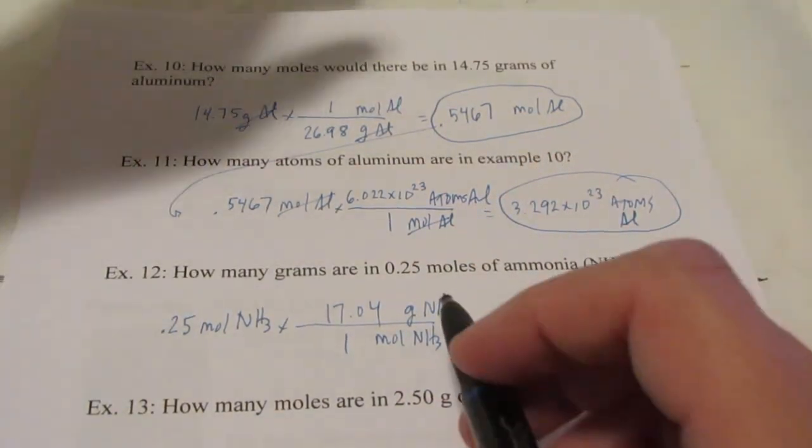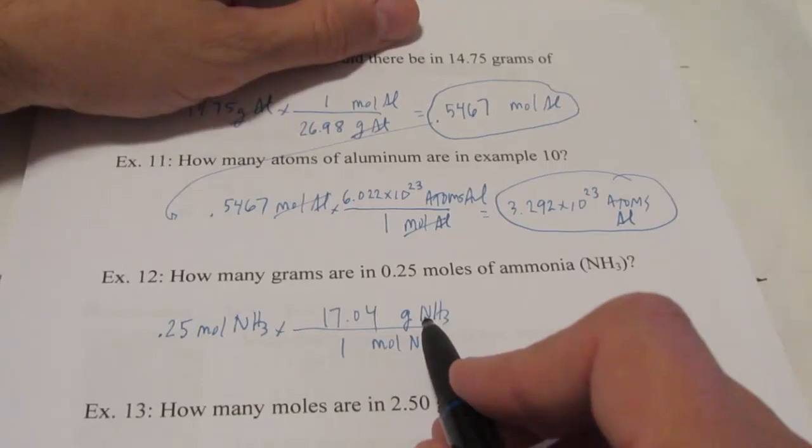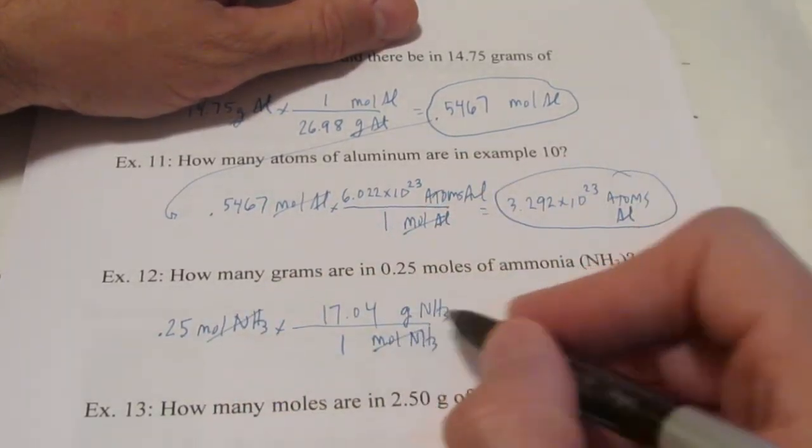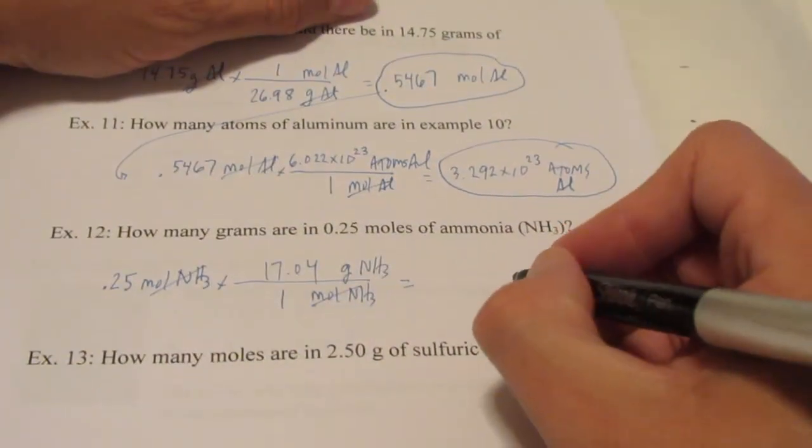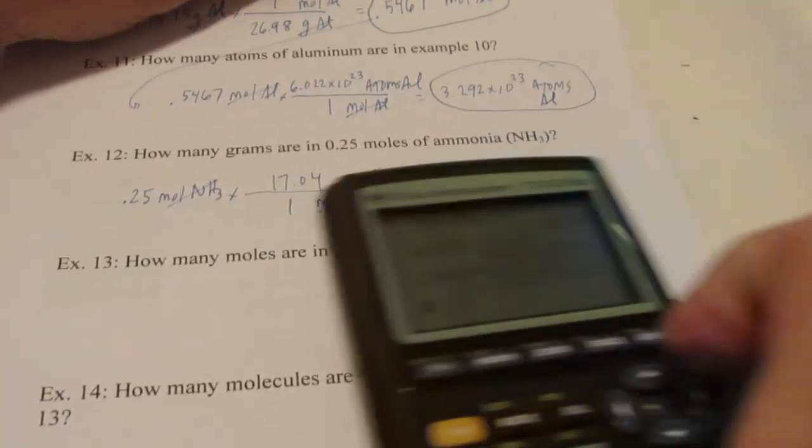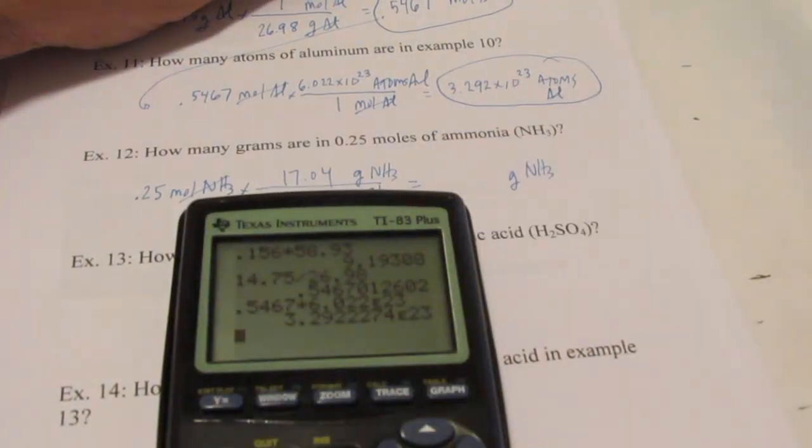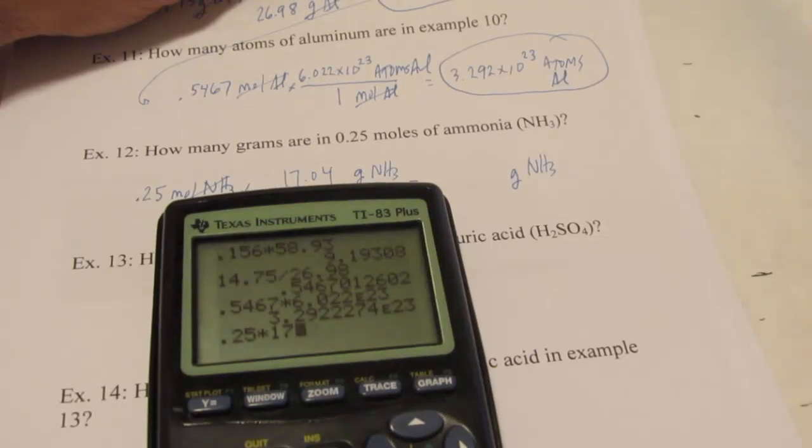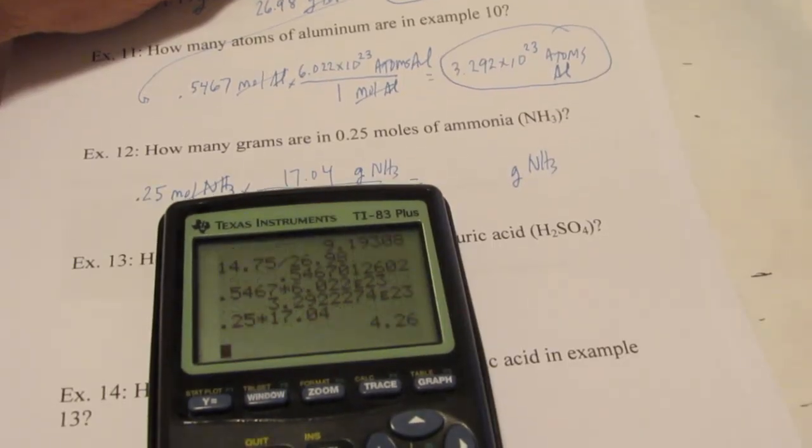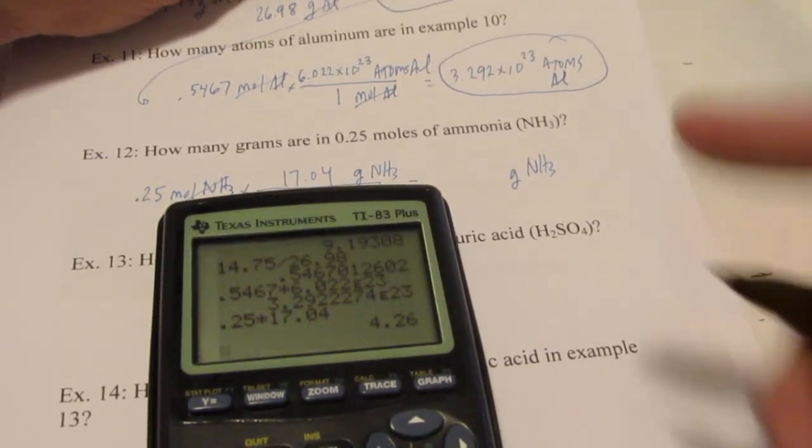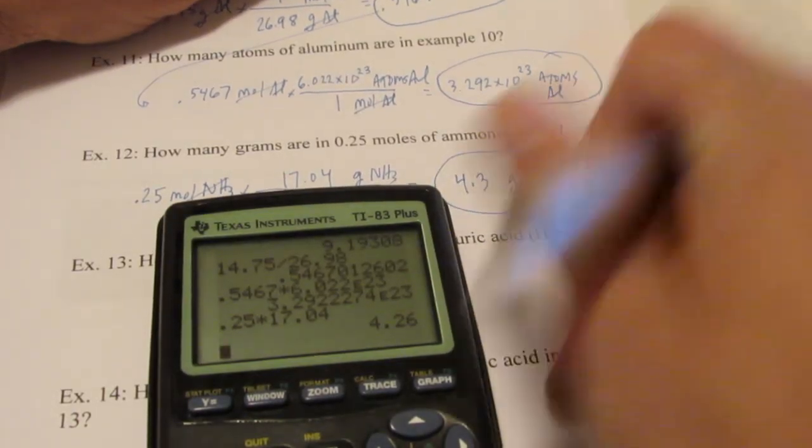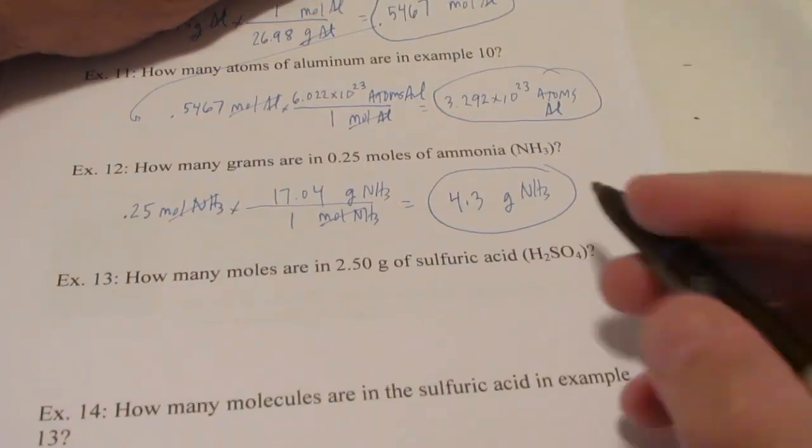So 17.04 grams per mole. Now, just as a review, we got that by adding the mass of 1 nitrogen to the mass of 3 hydrogens. So moles disappear, and we're into grams of ammonia. Now, it looks like we're only allowed 2 sig figs this time. 0.25 times 17.04, what do we get? 4.26 rounds off to 4.3 grams of ammonia.